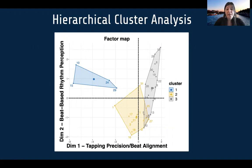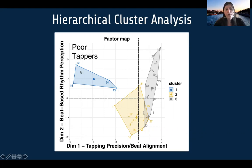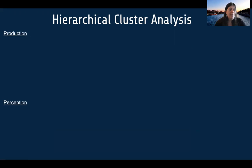We then ran a hierarchical cluster analysis to see how participants clustered within these dimensions. On the tapping precision and beat alignment dimension, everything below zero indicates poor tapping and above zero indicates good tapping — the same logic applies for the beat-based perception dimension. We identified an outlying group of very poor tappers, a group of poor perceivers, and a cluster of participants who were simply good at all tasks — good at perception, production, and everything.